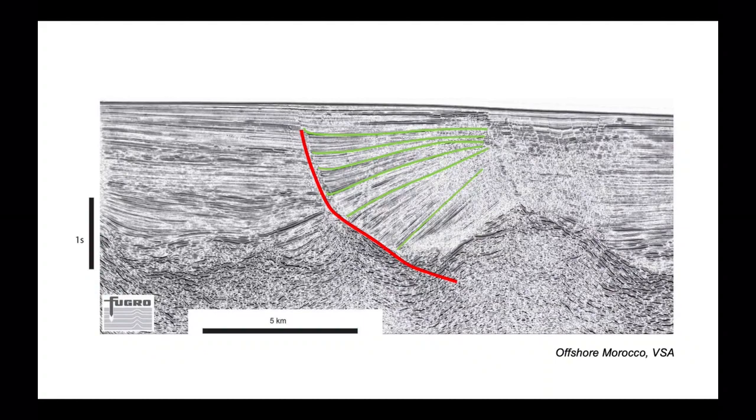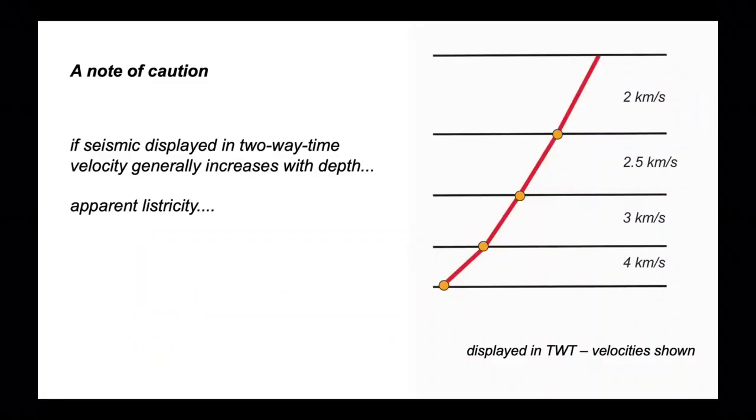Now we need to strike a note of caution with seismic interpretation. If, as in the last image, the seismic data are displayed not in depth but in two-way time, generally in the earth, and particularly in sedimentary successions, seismic velocity generally increases with depth as the rocks become increasingly compacted. This can generate apparent listricity in the trajectory taken by faults.